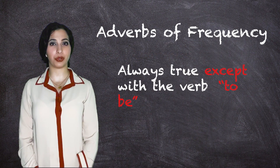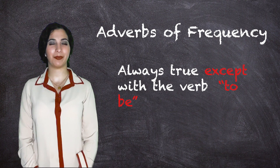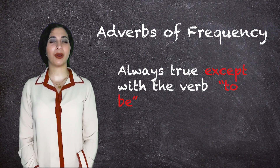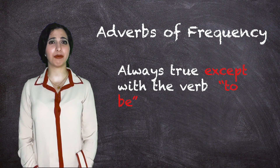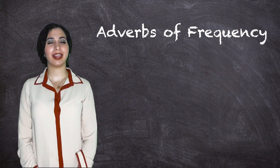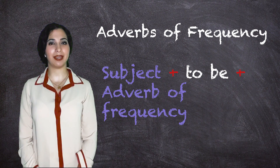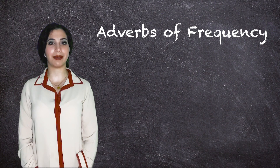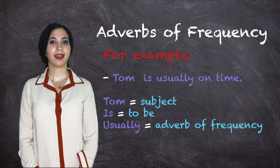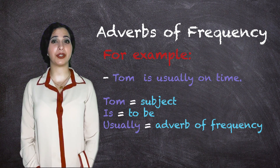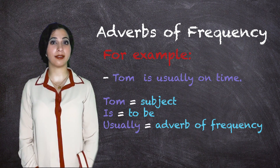This is always true except with the verb to be. When we are using the verb to be, the order becomes subject plus to be plus adverb of frequency. For example, Tom is usually on time.